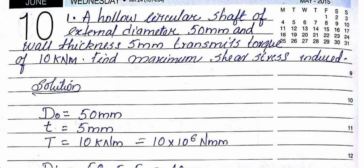Torsion: the first problem. A hollow circular shaft of external diameter 50mm and wall thickness 5mm transmits a torque of 10 kilonewton-meter. Find the maximum shear stress induced.